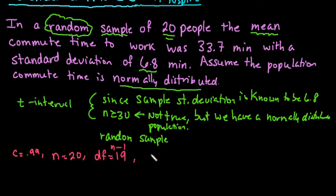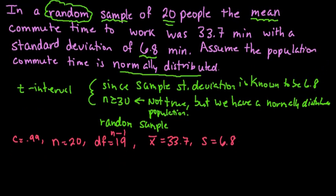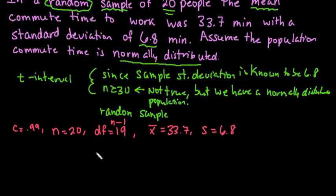The x-bar, our sample mean, is 33.7, and our sample standard deviation is 6.8. So this is all of the important information that we need to know in order to find all of our values.